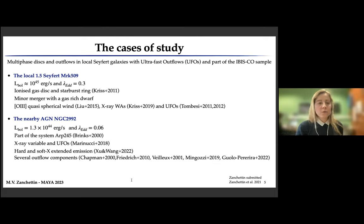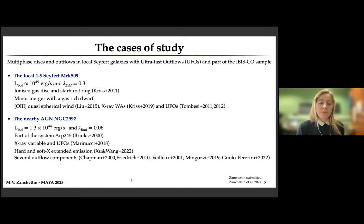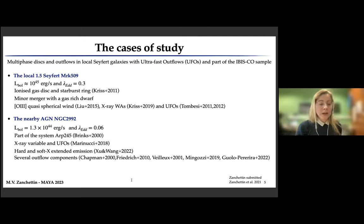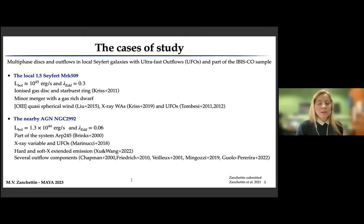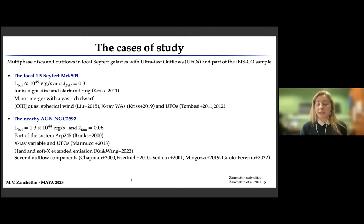For Markarian 509, we analyze the ALMA band 6 data. For the nearby AGN NGC 2992, this is a peculiar object, part of the interacting system ARP 245. It is variable in the X-ray and shows extended emission both in radio and soft X-rays, and also several outflow components. For this object, we analyze the MUSE, VLA, and ALMA data.